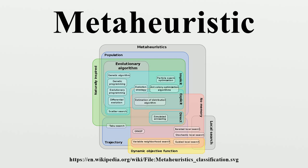Other global search meta-heuristics that are not local search-based are usually population-based meta-heuristics. Such meta-heuristics include ant colony optimization, evolutionary computation, particle swarm optimization, and genetic algorithms.